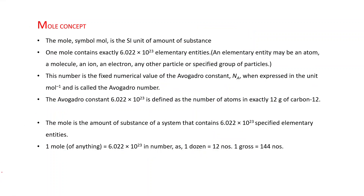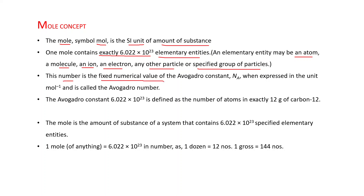Now, the mole concept. The mole (M-O-L-E), written symbolically as mol, is the SI unit of amount of substance. One mole contains exactly 6.022 × 10²³ elementary entities — an elementary entity may be an atom, a molecule, an ion, an electron, or any other particle or specified group of particles. This number is the fixed numerical value of the Avogadro constant, represented as Nₐ, and when expressed in the unit per mole it is called the Avogadro number. The Avogadro constant 6.022 × 10²³ is defined as the number of atoms in exactly 12 grams of carbon-12.